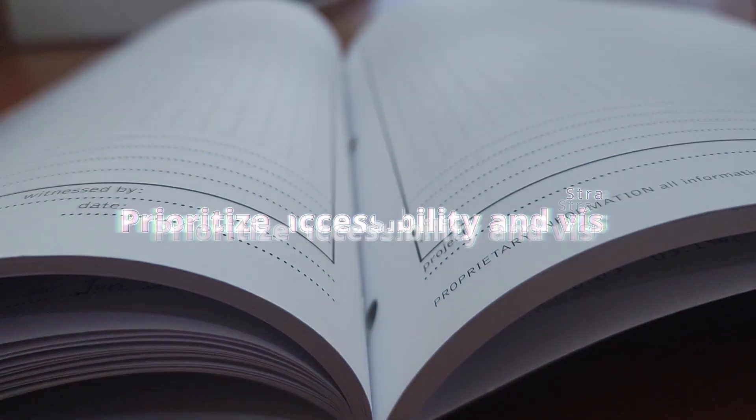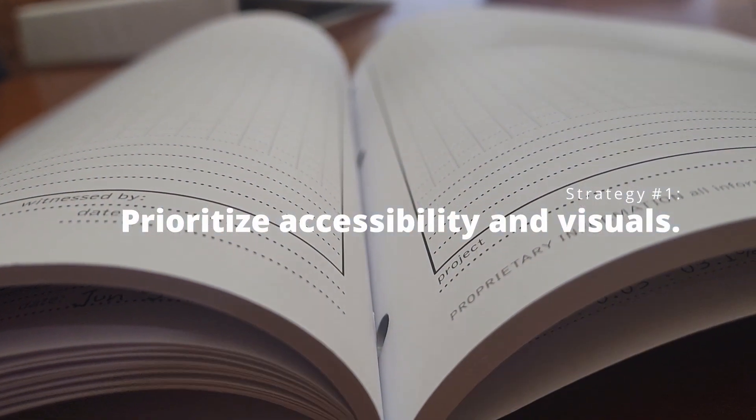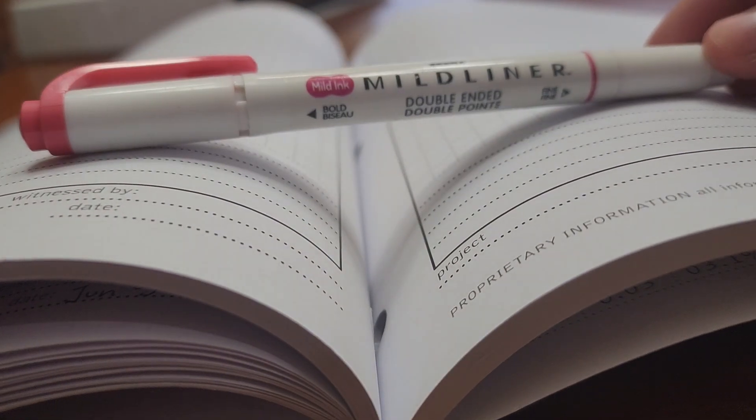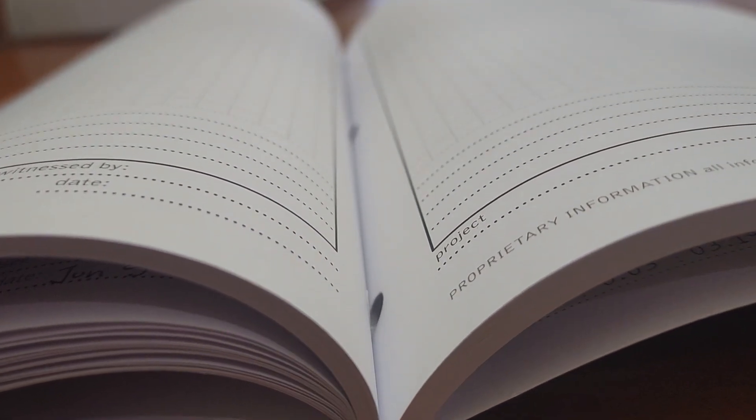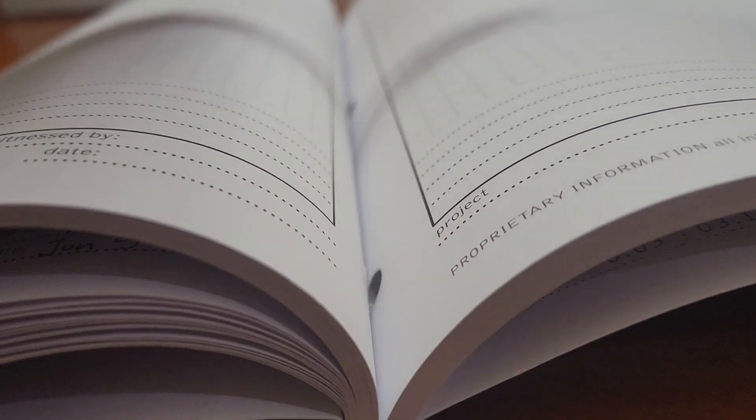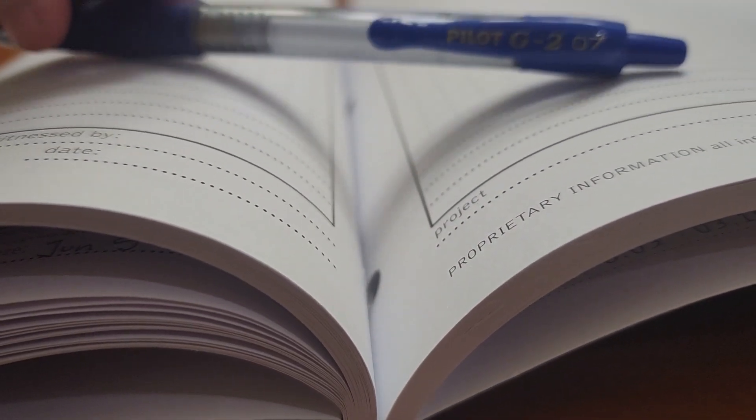The first one is prioritizing accessibility and visuals. If it's easy to find information, then that's a massive plus for both you and the judges, because you can actually read the info and easily find whatever it is you've been working on.